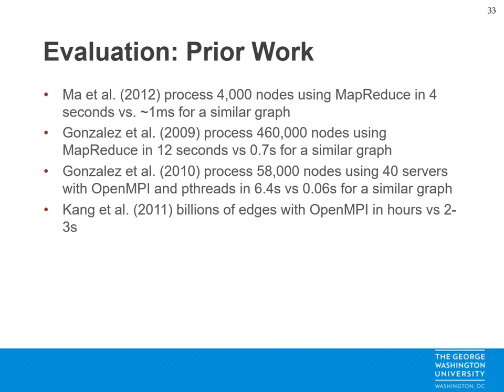Compared to prior work, CREDO does a lot better. Bob processed a 4,000-node graph using MapReduce in 4 seconds, while CREDO can do it in about 1 millisecond. Gonzalez in 2009 processed a 460,000-node graph using MapReduce in 12 seconds, while CREDO can process a similar graph in under a second. Gonzalez in 2010 could process a 6,000-node graph using compute servers with OpenMPI and pthreads in 6.4 seconds, while we can process a similar graph in under a tenth of a second. And finally Kant in 2011 processed billions of edges with OpenMPI in hours, while we can process a similar graph in just 2 to 3 seconds.